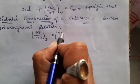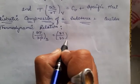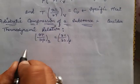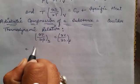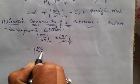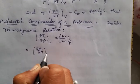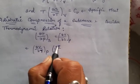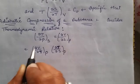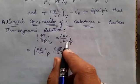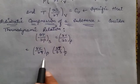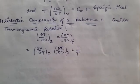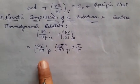We write this relation as (∂V/∂T) at constant P and (∂T/∂S) at constant P. This equation can be rewritten by multiplying and dividing by temperature T, giving us a modified form of the relation.